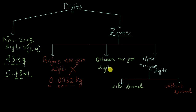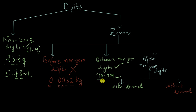What about zeros between non-zero digits? These are always going to be significant. For example, a measurement like 40.009 liters — how many significant digits does this have? The answer is 5. The 4, the zeros in between, and the 9 are all significant. So there are 5 significant digits in this number.